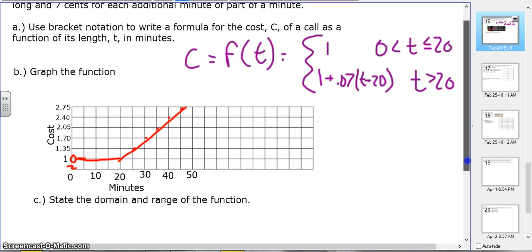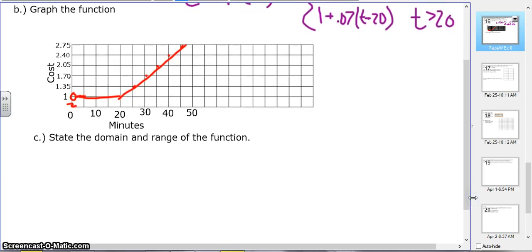What is the domain and the range of this function? Well, the domain is the x value, so x is greater than or equal to 0 because the x values are going to keep going up even though I didn't graph them all. And then the range, the lowest y value is at 1, so the y values are greater than or equal to $1.